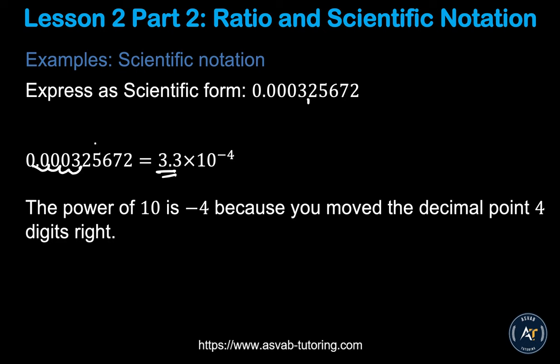Now let's learn how to convert scientific notation back to standard form. For 7.3 times 10 to the power 3, the exponent tells you to have three digits after the decimal — count 1, 2, 3. If you don't have enough digits, fill in with zeros. For another example: 6.4 times 10 to the power negative 4 — move the decimal four places and fill with zeros. Pause the video and try it yourself to make sure you understand.